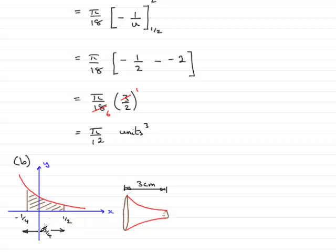Now what we have is similar solids. You can see that by multiplying 3 quarters by 4 gives 3 units, 3 cm. So the length scale factor is 1 to 4.